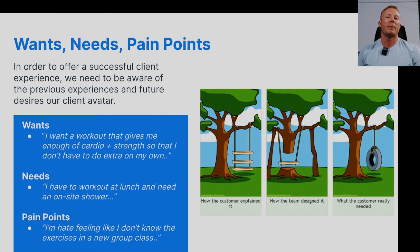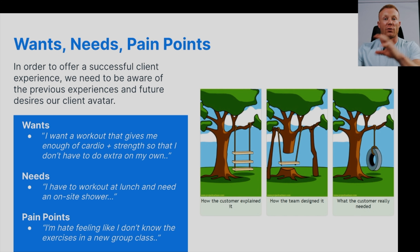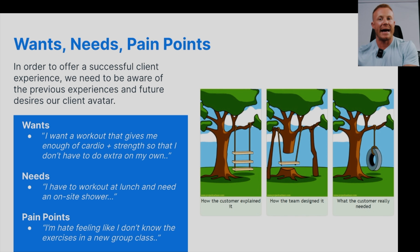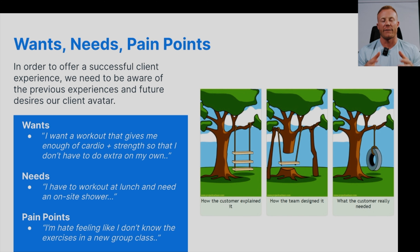Their wants, needs, and pain points are probably something you're more familiar with since you've gone through a sales process with them — you probably had to understand these in order to close them on your membership. In order to offer a successful client experience, we need to be aware of their previous experiences and future desires. Some people have no experience with fitness; others have a vast background. Some have no idea what goals to set; others know exactly where they want to go because they were there previously and fell off. For wants: I want a workout that gives me enough cardio and strength so I don't have to do extra on my own — you'd only know that from talking to clients.